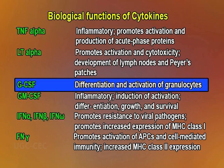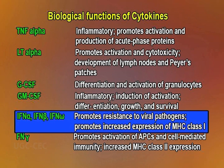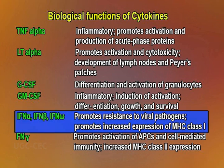G-CSF is involved in differentiation and activation of granulocytes. GM-CSF is associated with inflammatory action, induction of activation, differentiation, growth, and survival. IFN alpha, IFN beta, and IFN omega promote resistance to viral pathogens and increased expression of MHC class 1. IFN gamma promotes activation of APCs and cell-mediated immunity, and increased MHC class 2 expression.